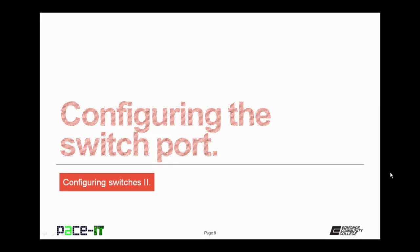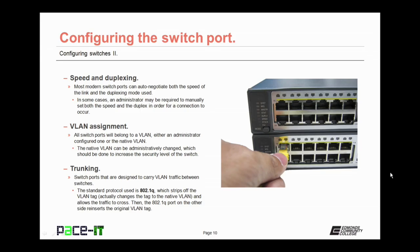Now let's move on to configuring the switch port. I'm going to give you the information you need to consider when configuring the switch port. First up is speed and duplexing. Most modern switch ports can auto-negotiate both the speed of the link and the duplexing mode, but in some cases an administrator may need to manually set both. Speed and duplexing errors are the most common cause for a link not being established between a switch and a router, or between switches.